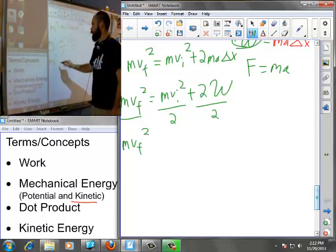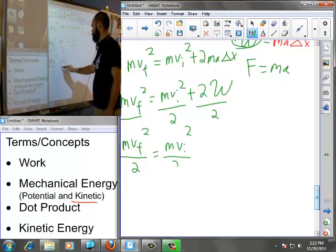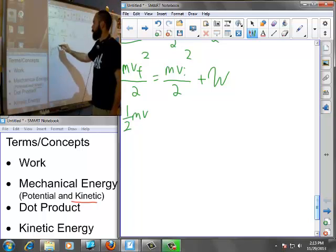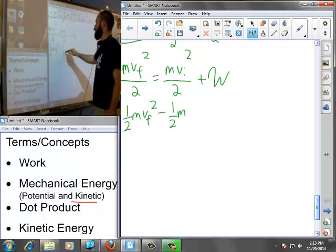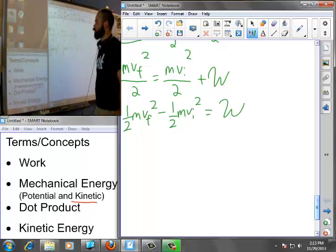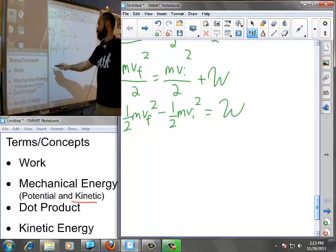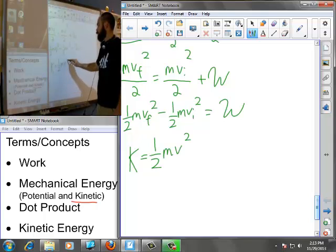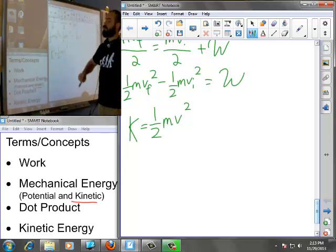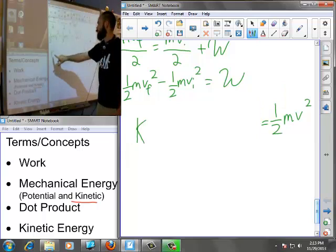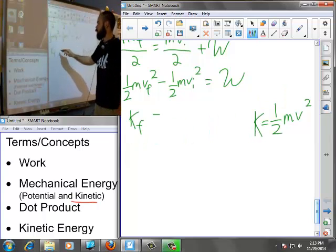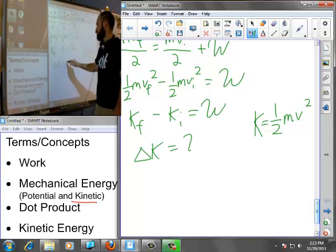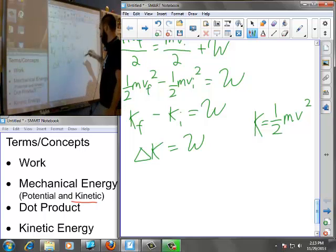Divide both sides by two. I'll move my one half mvi squared to the other side. The equation for kinetic energy appears to be one half mv squared. This would be kinetic energy final, this is kinetic energy initial. So it seems that the change in kinetic energy is indeed equal to work. Kinetic energy is calculated as one half mv squared.